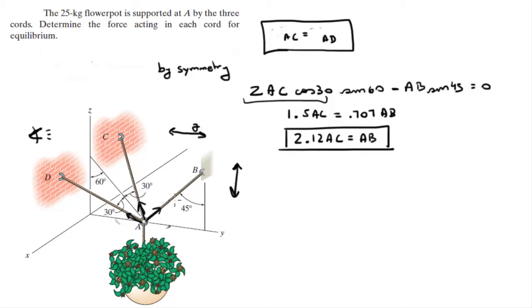For this AB, the component going up is this component right here. For these ones, the component going up is this component right here and it's times 2. So it's 2 times AC, because remember AC and AD are the same, times cosine of 30 will give me this projection right here, times cosine of 60 will give me the vector that I'm looking for, this vector right here.